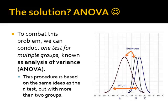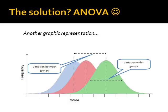To combat this problem, we can conduct one test for multiple groups, known as analysis of variance. This procedure is based on the same ideas as the t-test, but with more than two groups. The graphic to the right helps us understand this — essentially we're looking at the difference between groups and within groups. Understanding between versus within groups and looking at that variance. You can see there is variation between the groups, and also within the groups, and we look at the ratio of between to within, which helps us understand the impact of group membership.